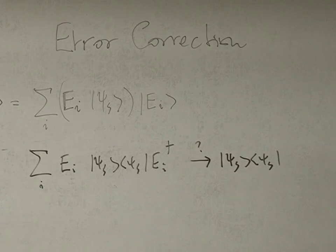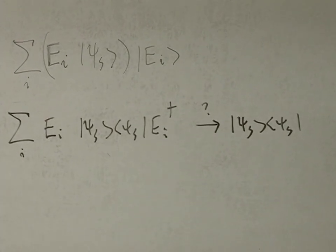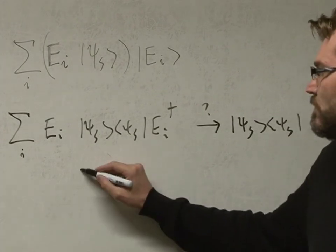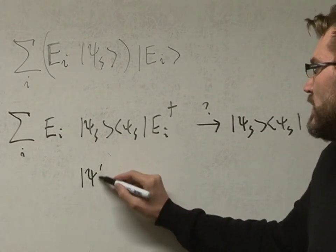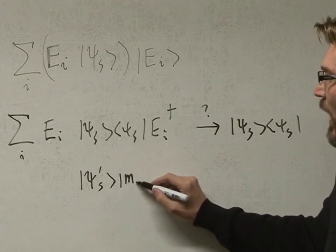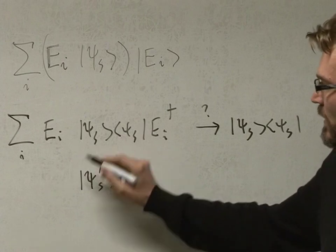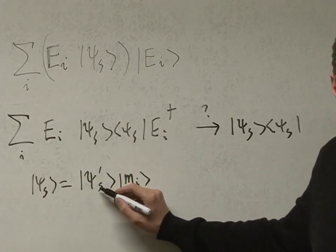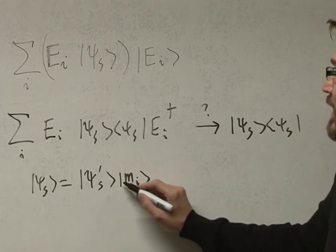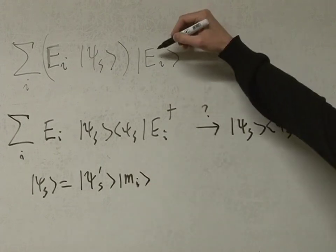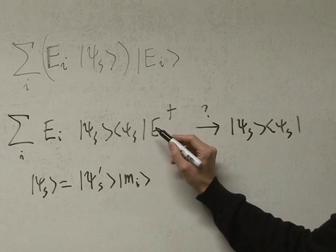In general I cannot do this, but if I have some redundancy — that S itself is composed of the thing I want to protect, plus an extra bit M_I — then S has two parts. One is the real bit carrying information, which could be a single qubit. The rest is what I call the syndrome: some kind of memory that also tags the environment and identifies which of the errors has happened.